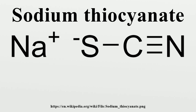Thiocyanate salts are typically prepared by the reaction of cyanide with elemental sulfur: 8 NaCN + S₈ → 8 NaSCN. Sodium thiocyanate crystallizes in an orthorhombic cell. Each Na⁺ center is surrounded by 3 sulfur and 3 nitrogen ligands provided by the triatomic thiocyanate anion.